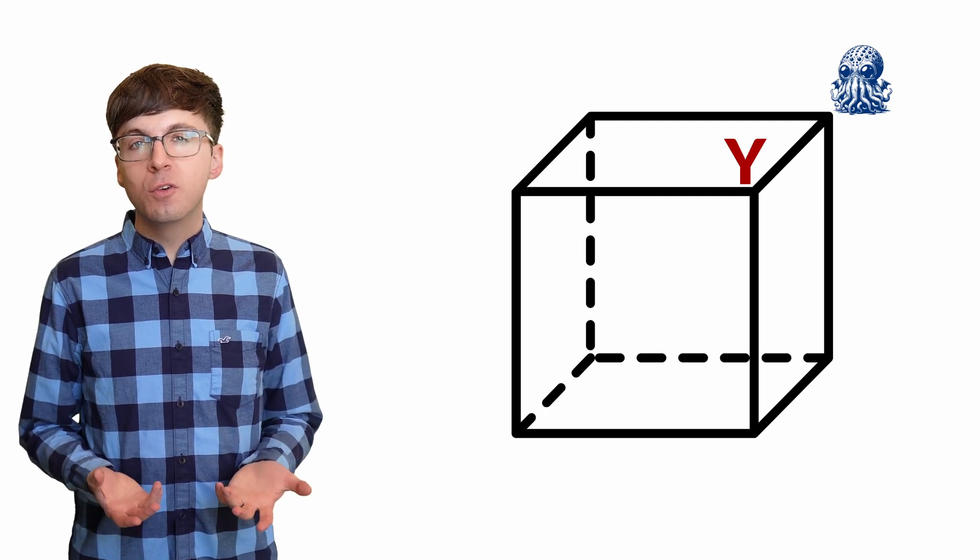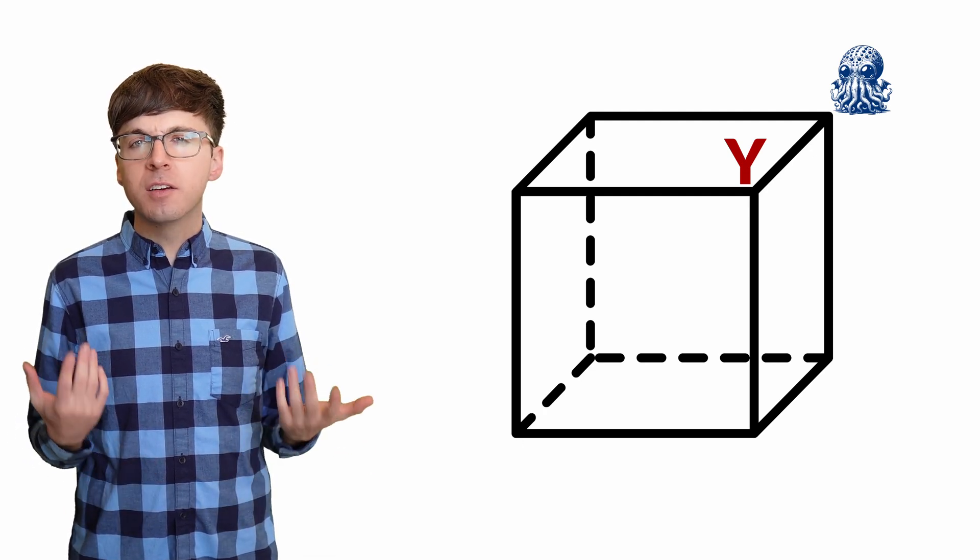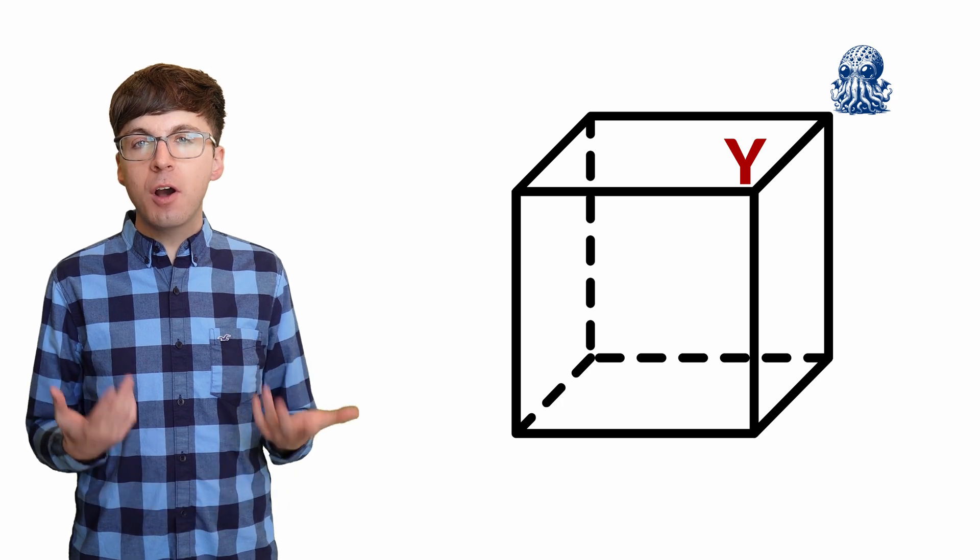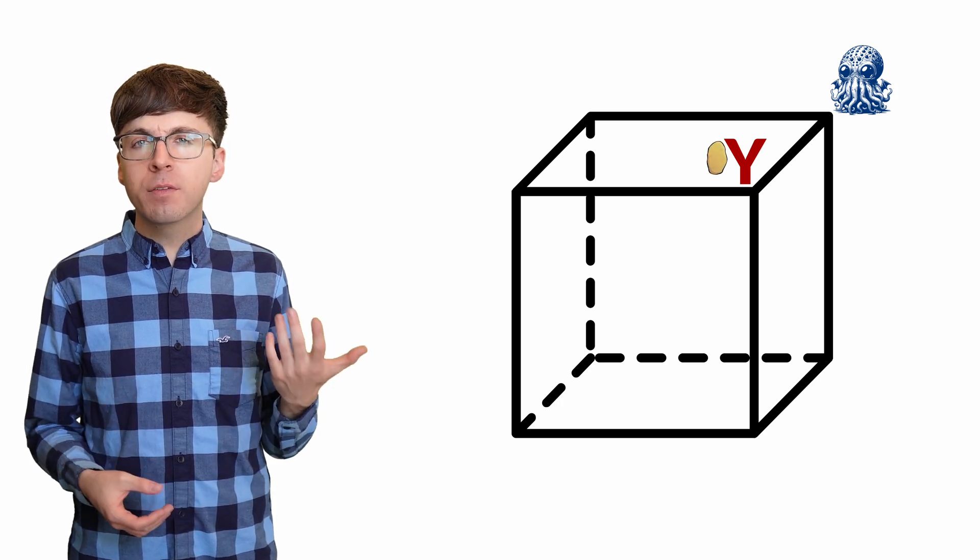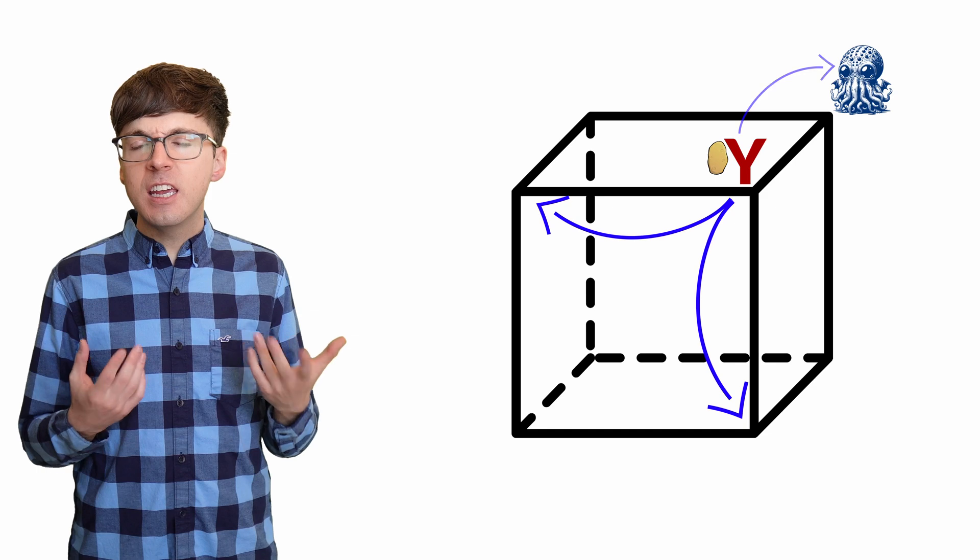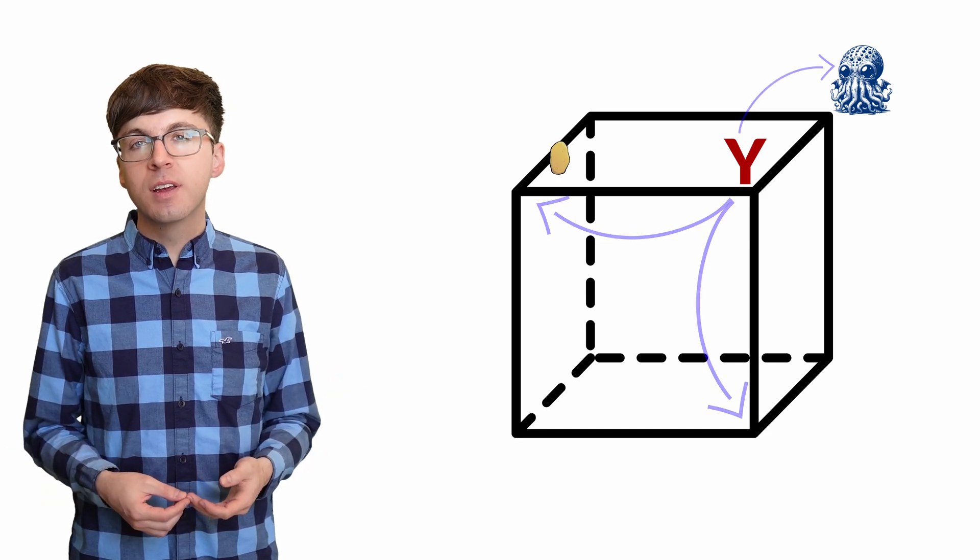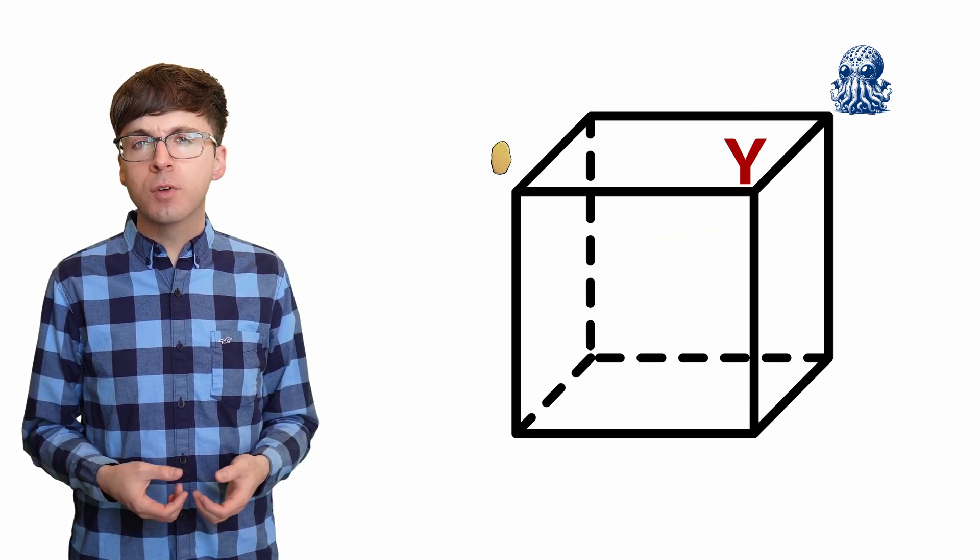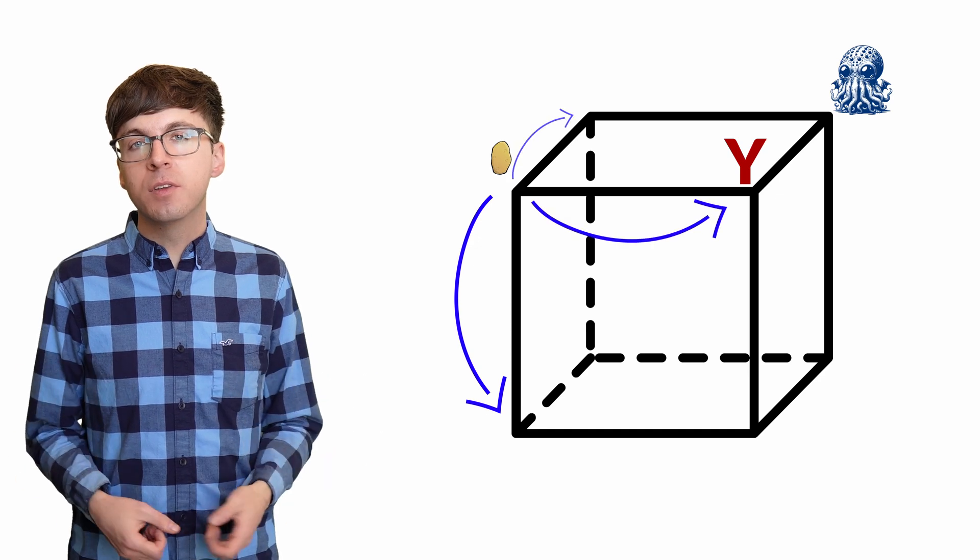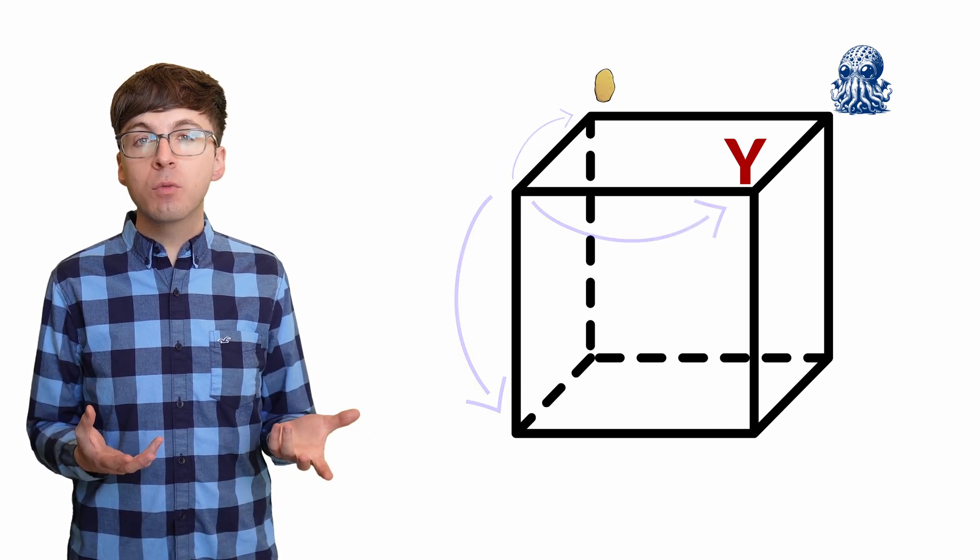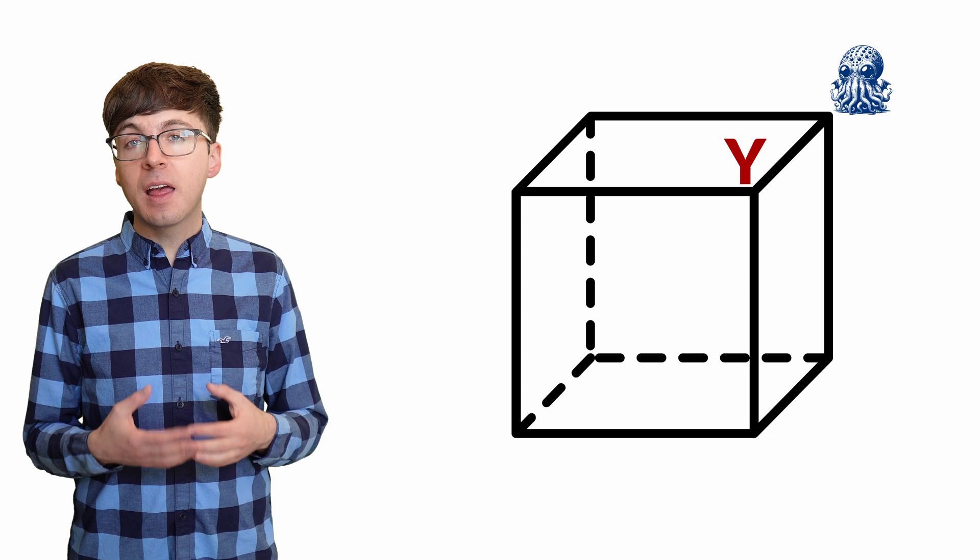You're standing at one vertex of a cube, and a hungry monster is at an adjacent vertex. You have a hot potato, and you throw it to one of the three adjacent vertices, each with probability one-third. There's a person at each other vertex who also throws the potato the same way. Once the potato is thrown to the monster, it will eat it, and the game is over.